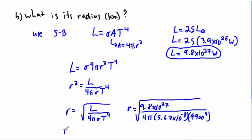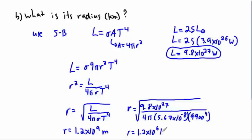So R = 1.2 × 10⁹ meters. But we wanted it in kilometers. There are 1,000 meters in a kilometer, so I divide by 1,000 — that means I subtract three from the exponent. So R = 1.2 × 10⁶ kilometers.